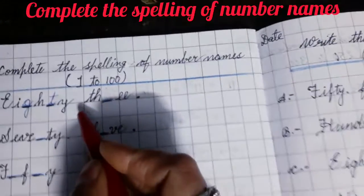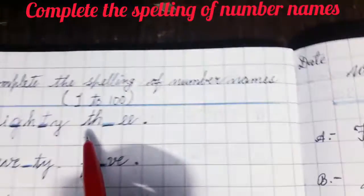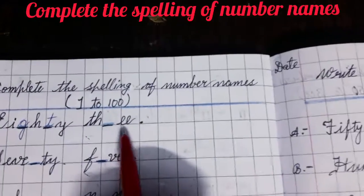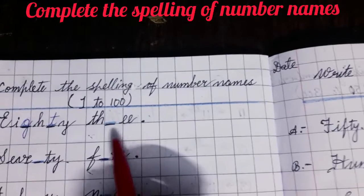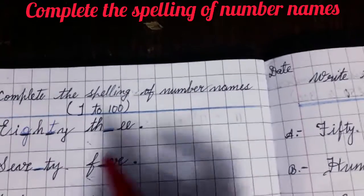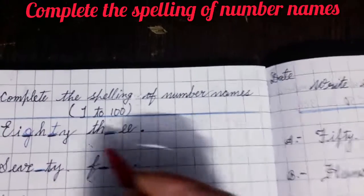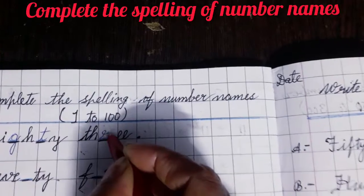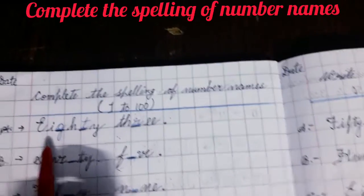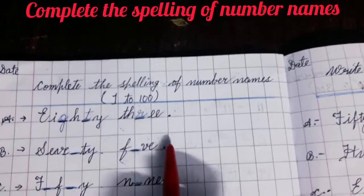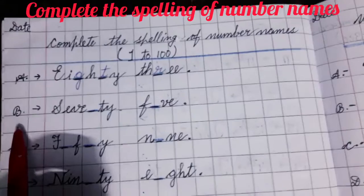And after leaving one block, what is written here? T H blank space E E. So what is this? This is 3 — THREE. So what you will fill here after T H? You will fill in R. So which number name is this? This is 83 — EIGHTY THREE.